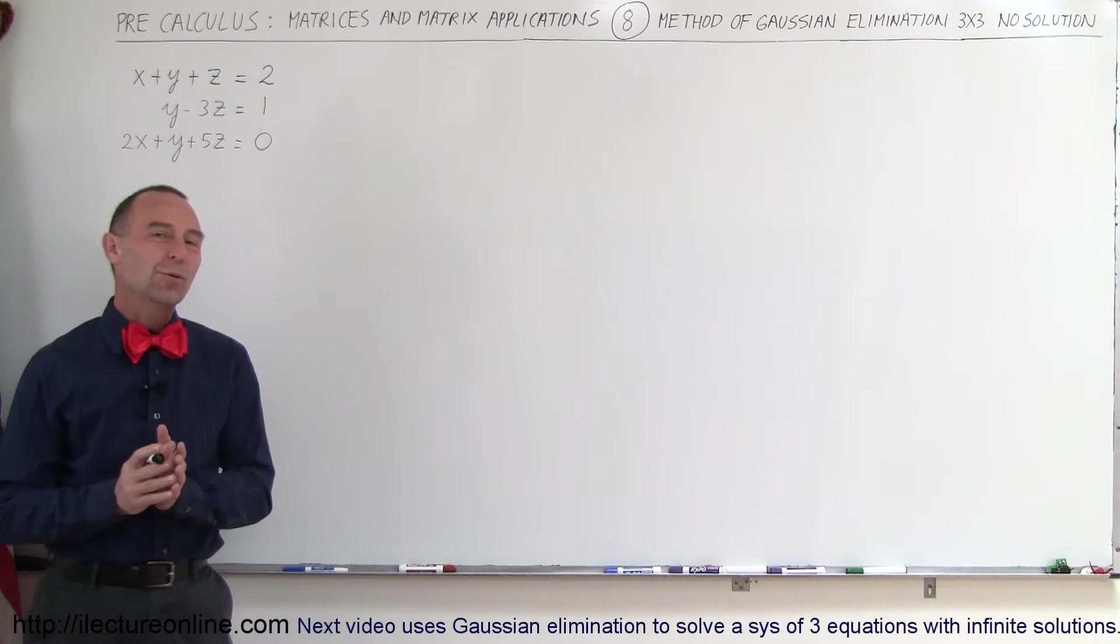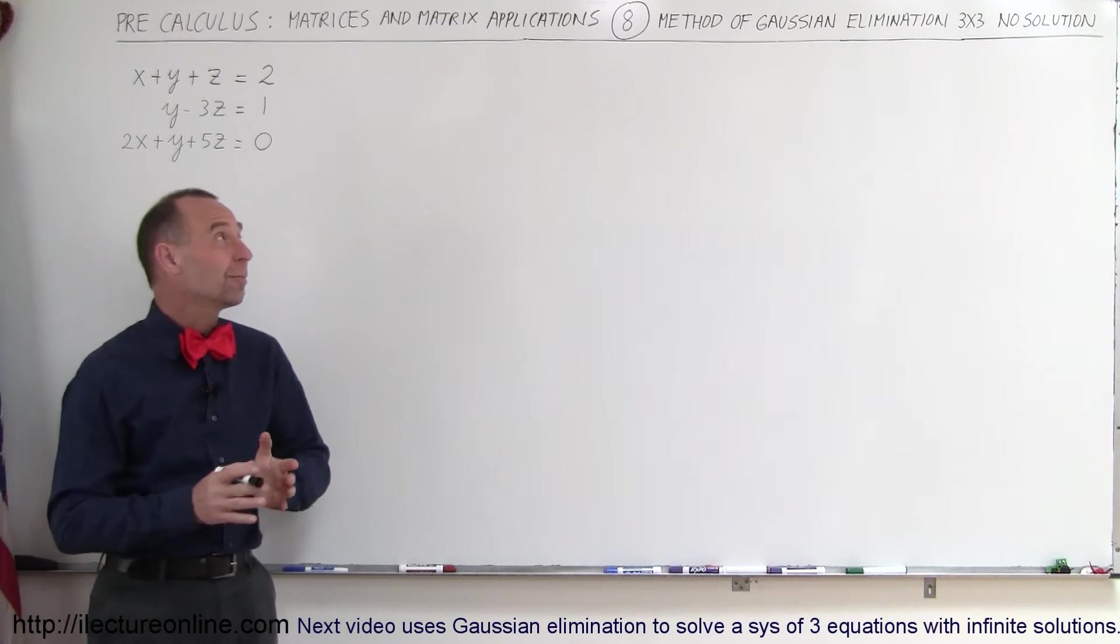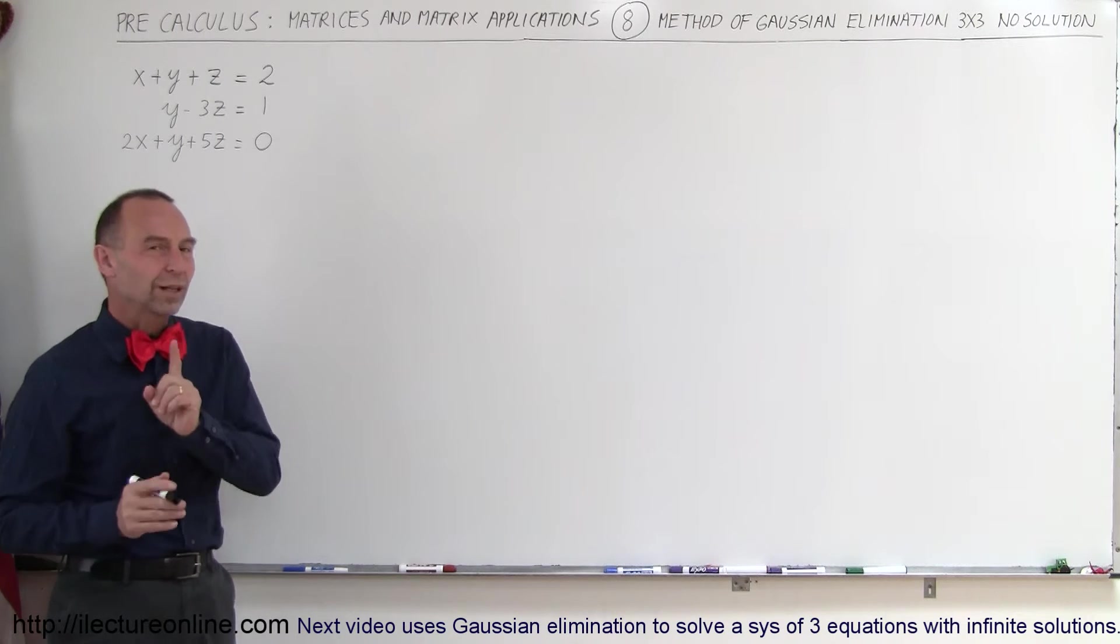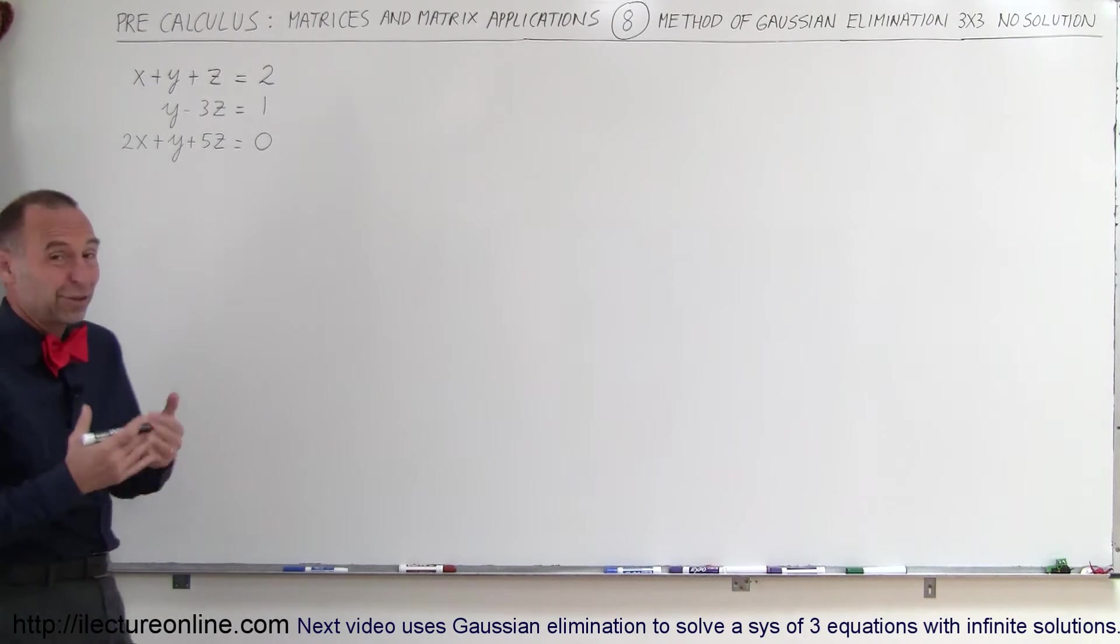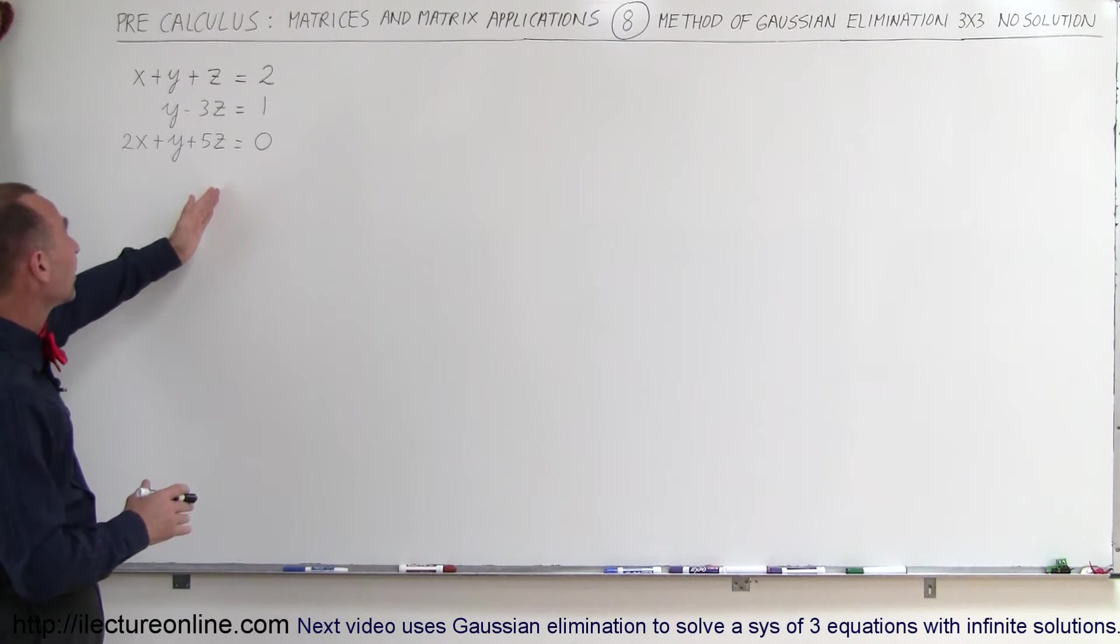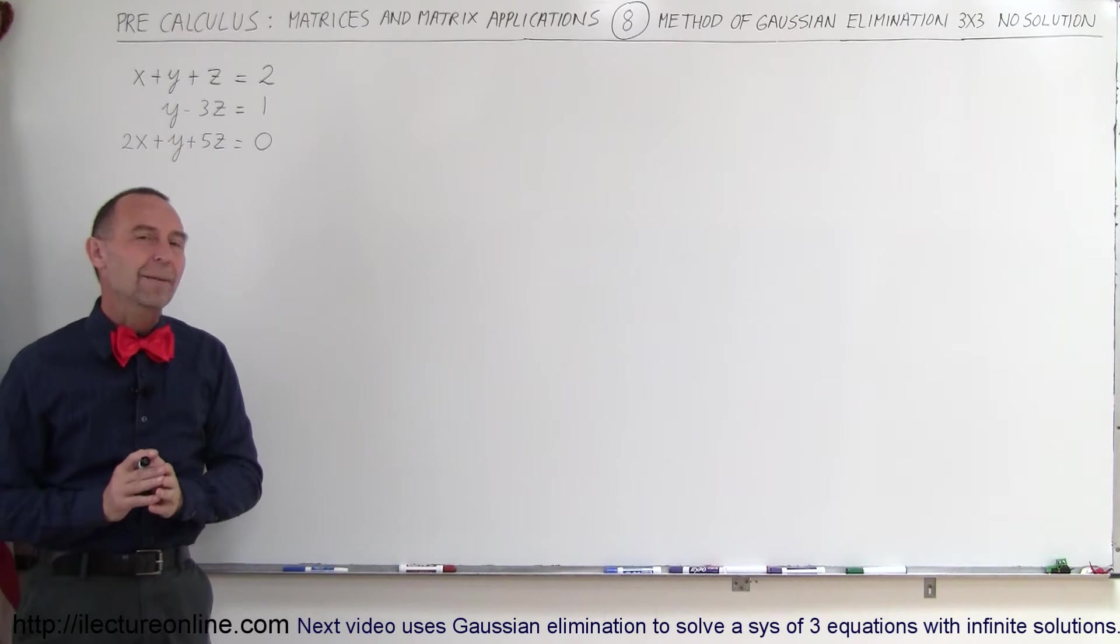Welcome to Electron Line. In this video we're going to show you how to use the Gaussian method of elimination to solve a 3 by 3 matrix. Actually what we're solving is three equations and three unknowns. We're trying to find the x, y, and z value that will satisfy all three equations at the same time.